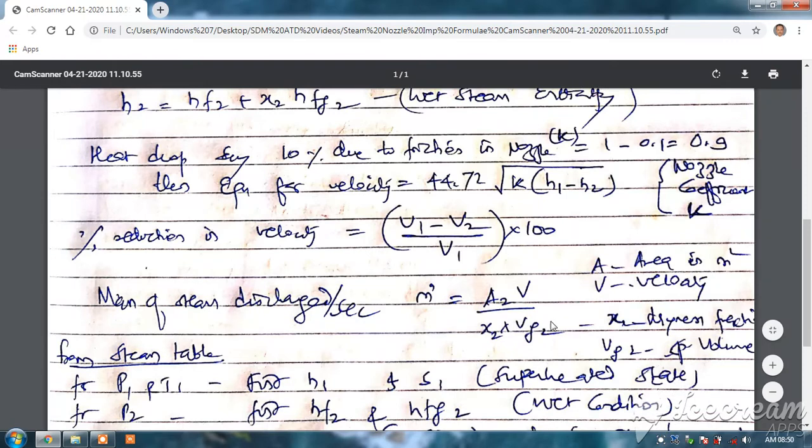Now, heat drop - say 10 percent loss due to friction means we will say k is equal to 1 minus 0.1, so it is 0.9. So we will consider it as k is equal to 0.9, 10 percent efficiency drop due to friction. Then the equation becomes 44.72 in square root of k into delta h, that is h1 minus h2, where this k is a nozzle coefficient.